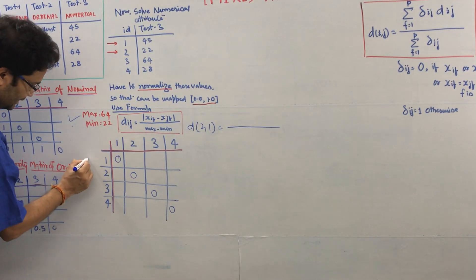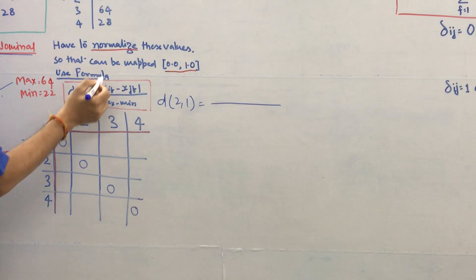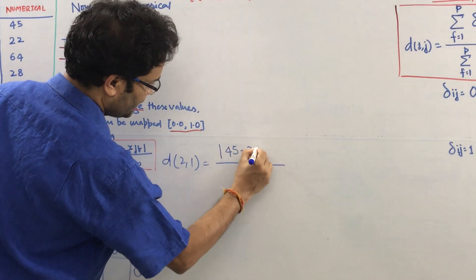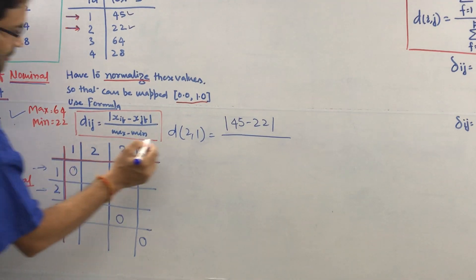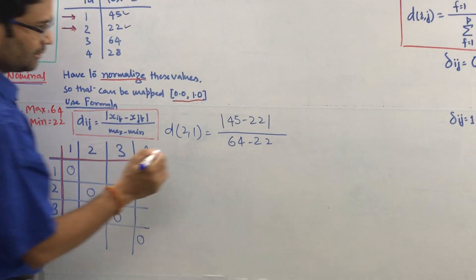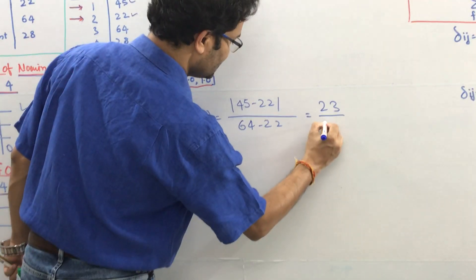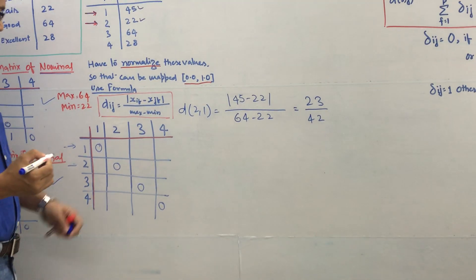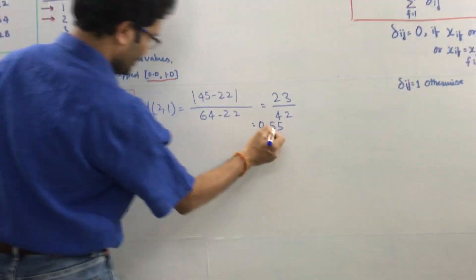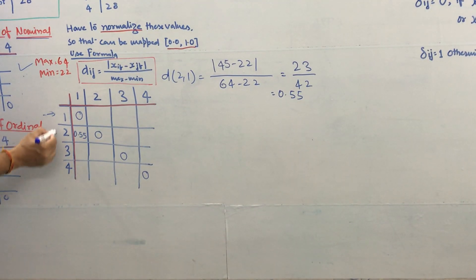Let me first calculate d(2,1). This is the i and this is the j. This value 45 and 22. So mod of 45 minus 22 divided by max minus min, which is 64 max and 22 min. This data value will become 23 right, and then difference is 23. If you solve this it will become 0.55. You put this 0.55 here.